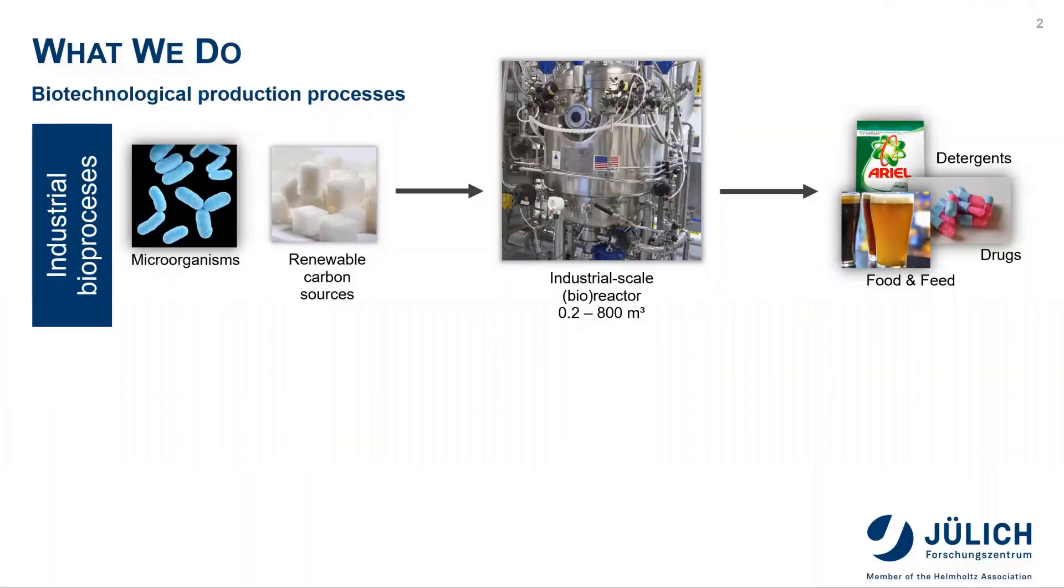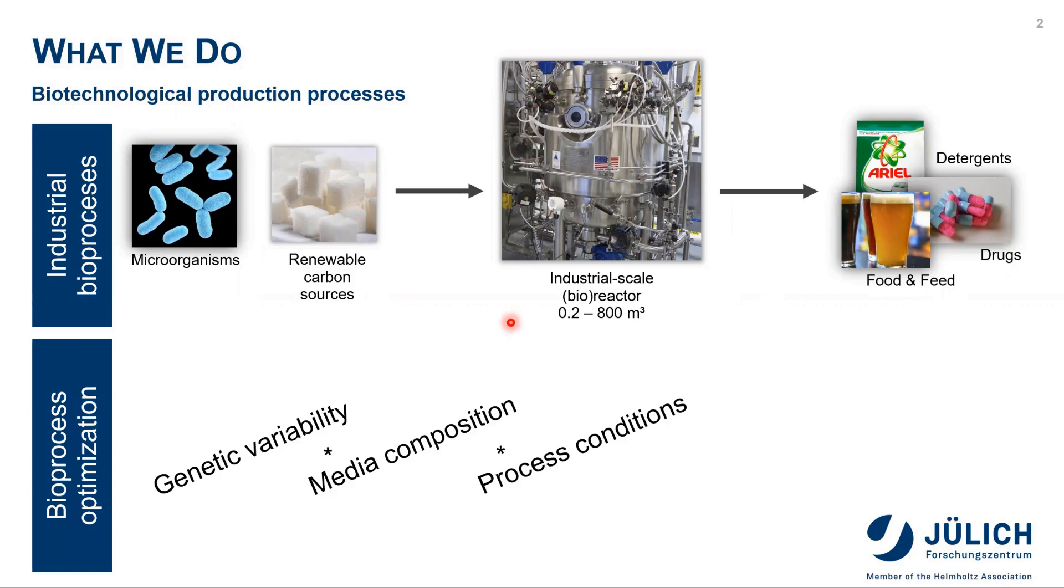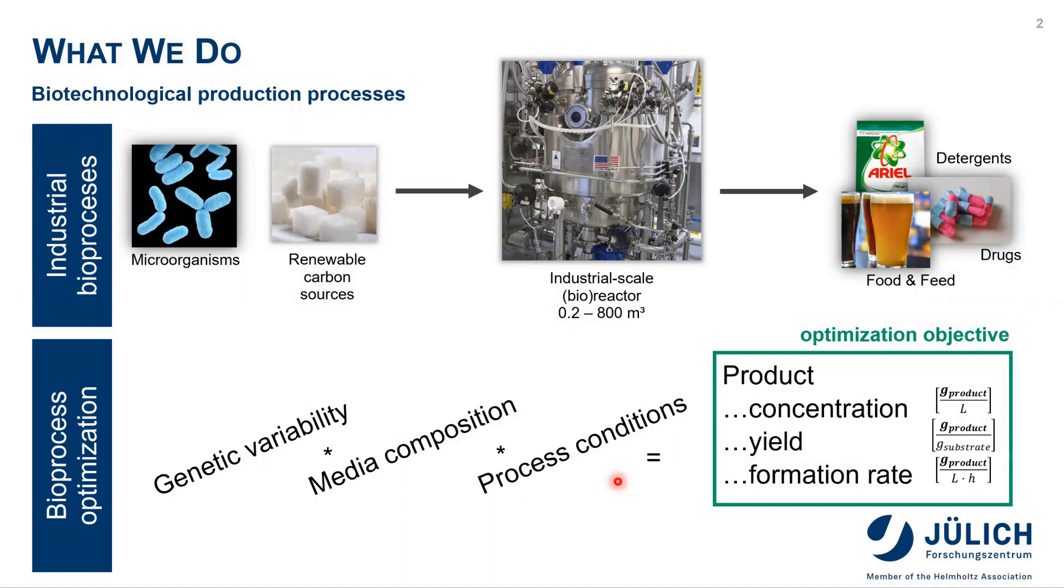What we usually do in biotechnology is when we want to come up with an industrial production process, we use biological systems, for example microorganisms, to convert renewable carbon sources into value products, which could be detergents, drugs or food additives. In an industrial process, we use large scale bi-reactors for this. When developing such a process, we need to optimize the various steps. We could optimize which microorganisms we use and their genetic variability, the different substrates and process conditions. We easily get a high combinatorial diversity. In order to rank all those different candidates, we need to define an optimization objective. In biotechnology, this is often a concentration, a yield or formation rate. What all of those have in common is that we need to quantify the amount of product that we produce.